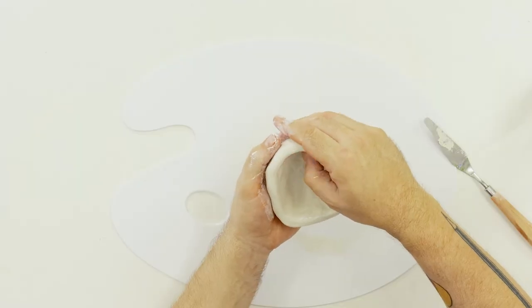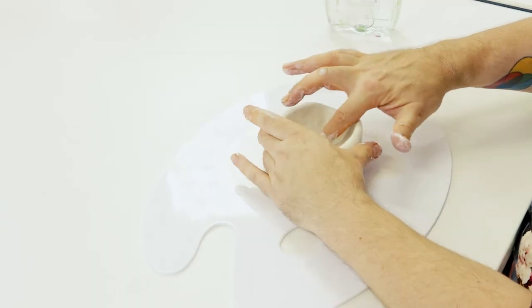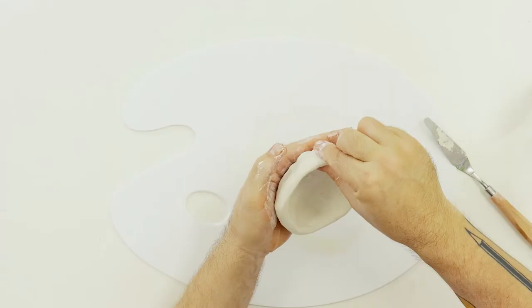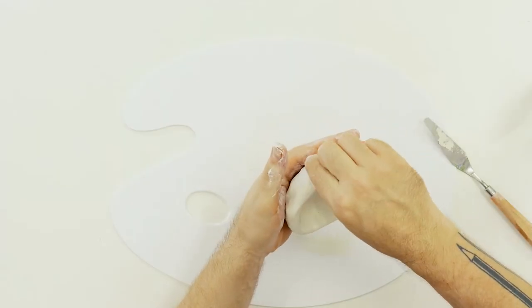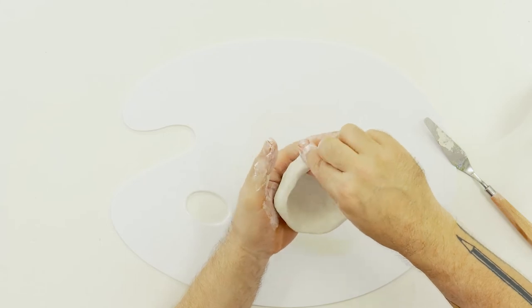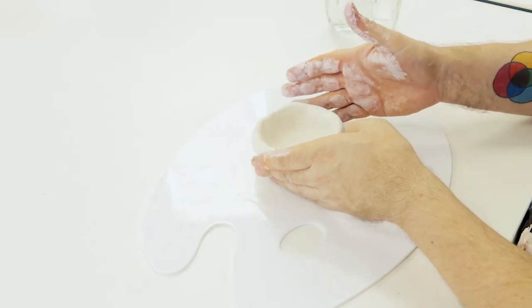Take your time with this and ensure that the wall thickness is at least one centimetre thick. You might notice that your hands are drying out the clay. If this happens just dip your hands into some water and smooth out the clay.